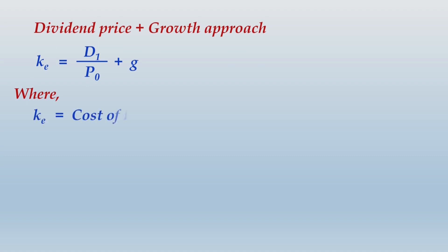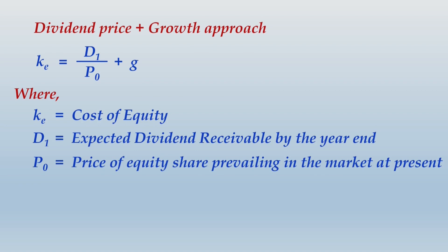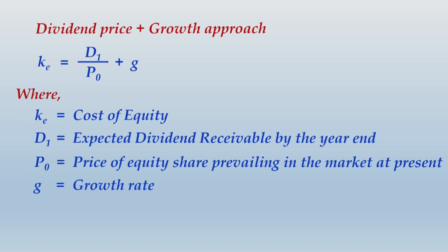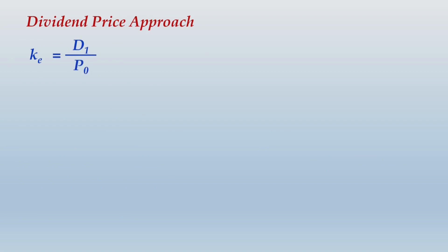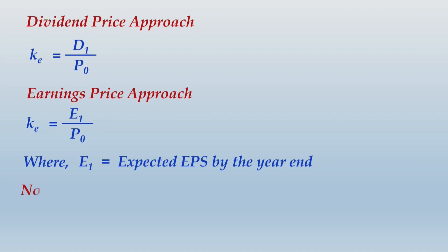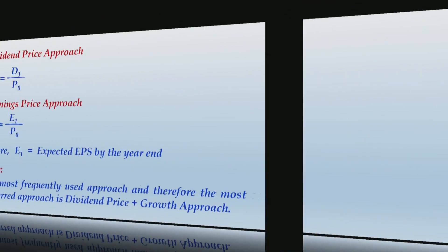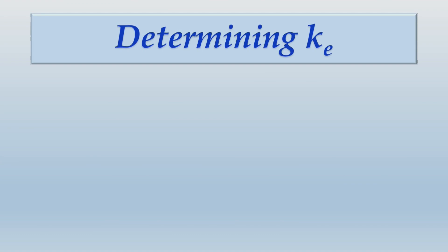Under the dividend price plus growth approach: Ke = D1/P0 + g, where Ke is cost of equity, D1 is expected dividend receivable by year end, P0 is the current market price of the equity share, and g is the growth rate. Under the dividend price approach: Ke = D1/P0. Under the earnings price approach: Ke = E1/P0, where E1 is the expected EPS by year end. The most frequently used and preferred approach is the dividend price plus growth approach.